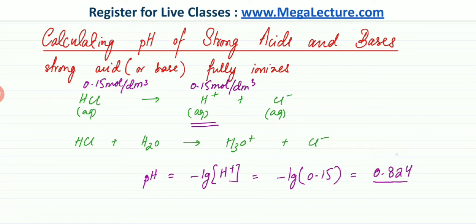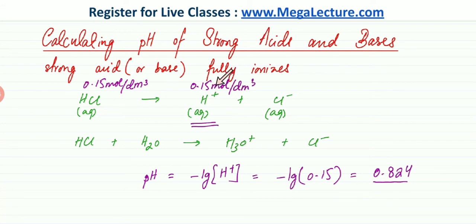The lower the pH, the higher the H⁺ concentration. A pH of 0.824 is quite low, meaning the concentration of H⁺ ions is quite high. Also remember that pH has no specific range — although at O-level you studied it from 0 to 14, there is no specific range. Concentration values don't usually go very high, which is why it's typically range-bound, but pH can have negative values as well.